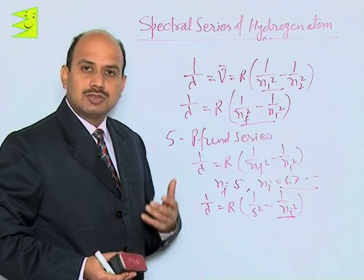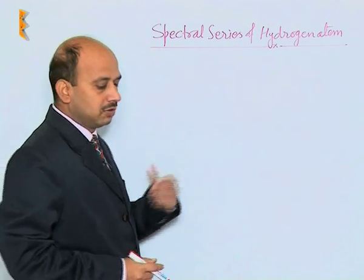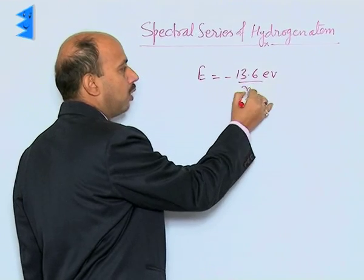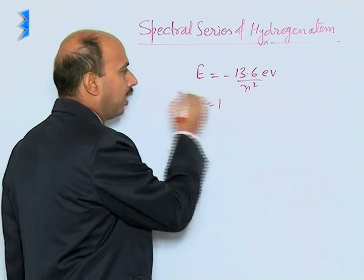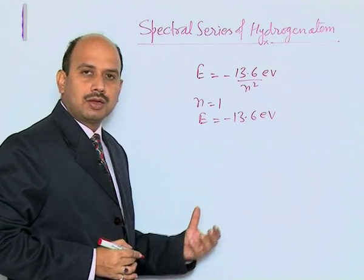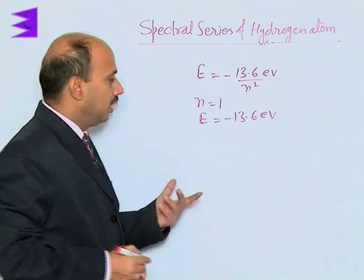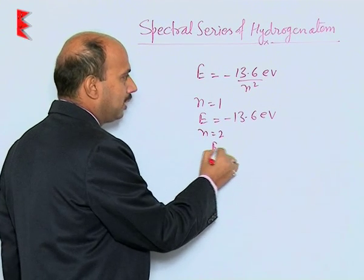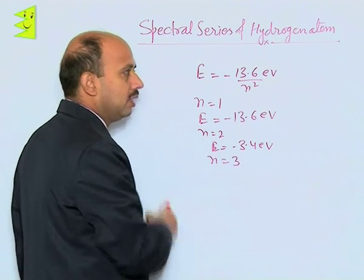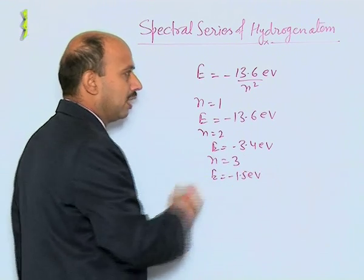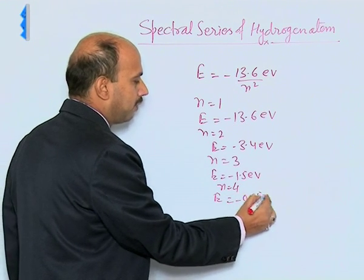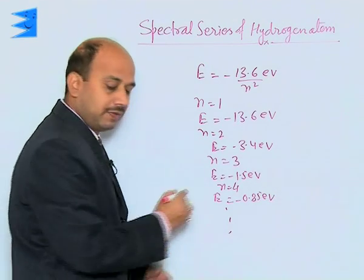These are the different spectral series of the hydrogen atom. Now we can see the energy levels. The total energy is minus 13.6 electron volt upon n square. For n equal to 1, energy is minus 13.6 eV, which is the ground state energy. For n equal to 2, energy is minus 3.4 eV. For n equal to 3, energy is minus 1.5 eV. For n equal to 4, energy is minus 0.85 eV.